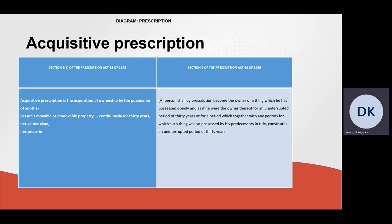Under the Prescription Act of 1943, acquisitive prescription is the acquisition of ownership by the possession of another person's movable or immovable property continuously for 30 years. In terms of the Prescription Act of 1969, a person shall by prescription become the owner of a thing which he has possessed openly and as if he were the owner thereof for an uninterrupted period of 30 years, or for a period which together with any periods for which such thing was so possessed by his predecessors in title constitutes an uninterrupted period of 30 years.